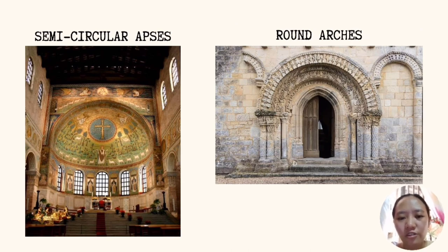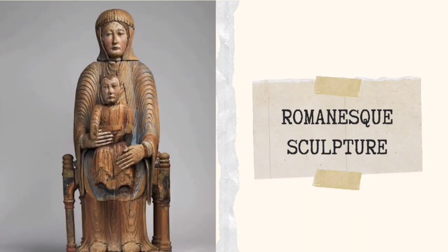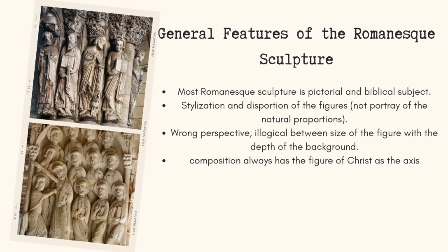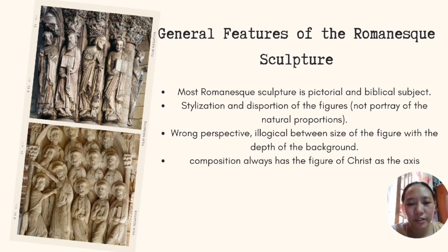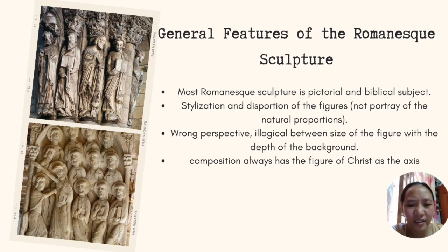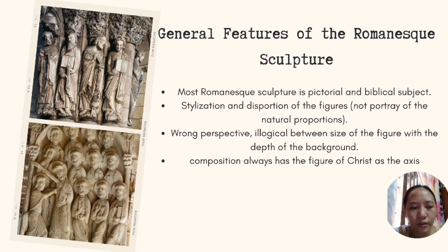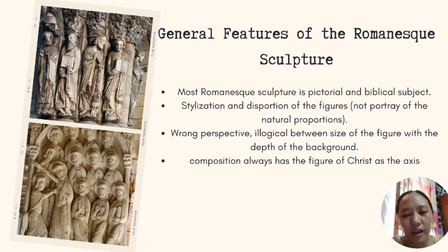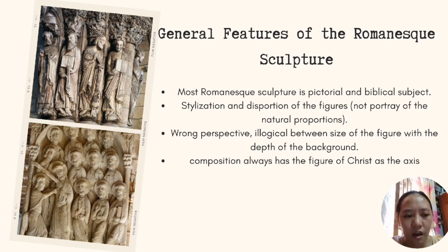Semi-circular apses and round arches can also be seen in Romanesque architecture. Most Romanesque sculpture is pictorial with biblical subjects. Although not as outstanding as the Romanesque architecture, the sculpture applies pre-established codes and artistic schemes to provide a clear and educative religious message. In Romanesque sculpture, figures were not proportioned — some elements or parts of the body were emphasized — and it is mostly unrealistic and inexpressive.